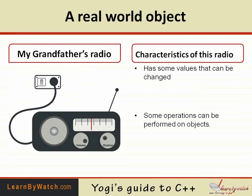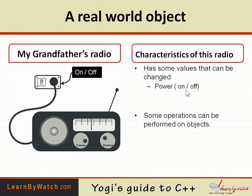I take a real world object as an example. This radio is my grandfather's radio, and as I described, it has some values that can be changed and some operations that can be performed on it. First, we can switch the radio on and off. By switching it on and off, we are changing the value of power. The operation is called 'change state' — it will become on when it is off, and off when it is on.